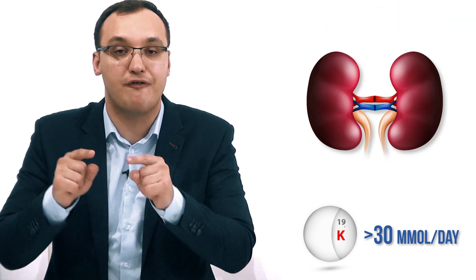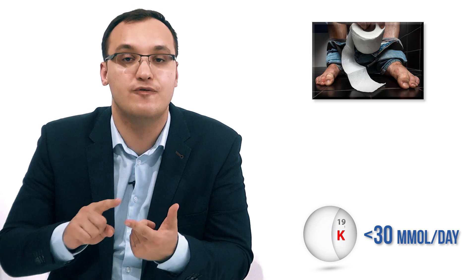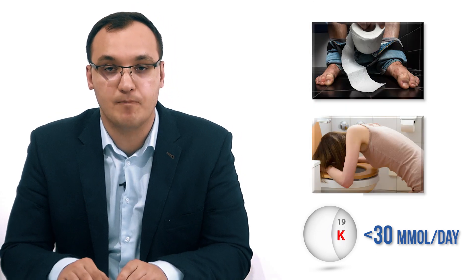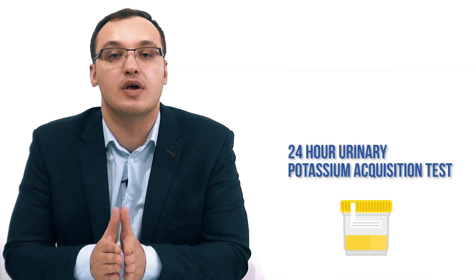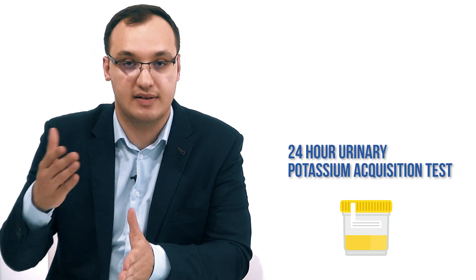We ask the patient to urinate during 24 hours, collect this urine, and then measure the potassium level in it. If it's more than 30 millimoles of potassium excreted in one day, then we can be quite sure it's somehow related to a kidney problem. If it's less than 30 millimoles per day, then it's probably another cause — for example, diarrhea or vomiting. This 24-hour urinary potassium excretion test is the most accurate test to do.